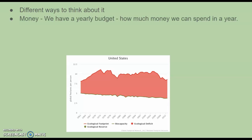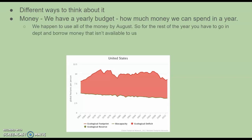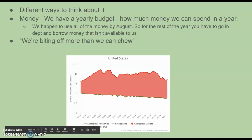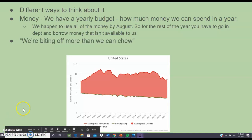Think of it like how much money you can spend in a year. If we use all of our money by August, for the rest of the year we have to go into debt and borrow money that isn't available to us. We're essentially biting off more than we can chew.